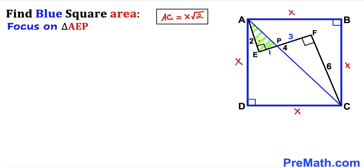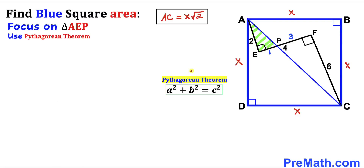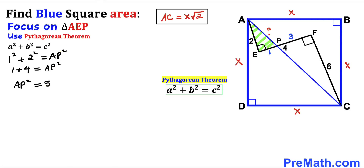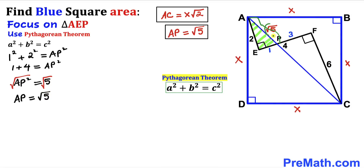Let's apply the Pythagorean theorem to right triangle AEP, where the longest side is AP and the legs are EP = 1 and AE = 2. So 1² + 2² = AP², giving 1 + 4 = AP². Taking the square root, AP = √5.